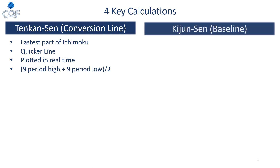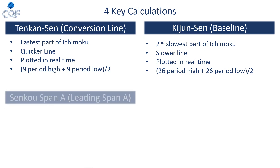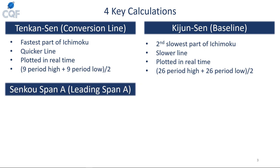The baseline is the second slowest part of the Ichimoku, also plotted in real time. It is the 26-period high plus the 26-period low divided by two. Moving on to the spans, we have span A and span B — these are what make up the cloud.